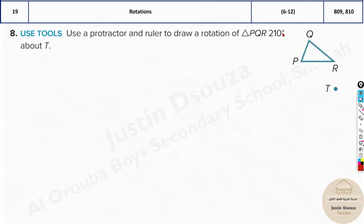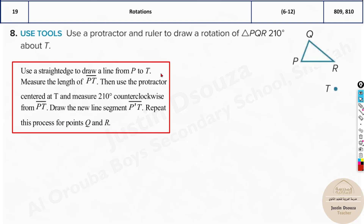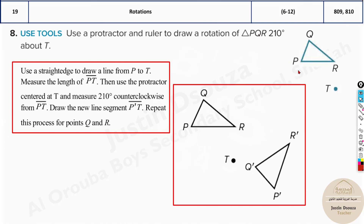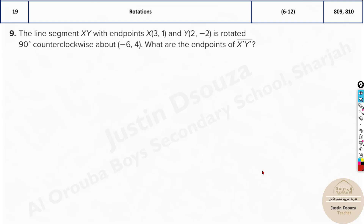Here they have given 210 degrees. Apply the same concept: draw the line segments, then use a protractor to measure 210 degrees counterclockwise, and use a ruler to transfer the distances. That gives you the rotated figure.